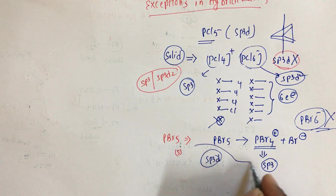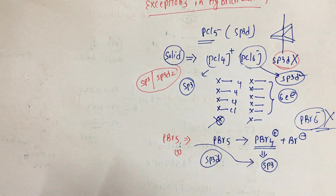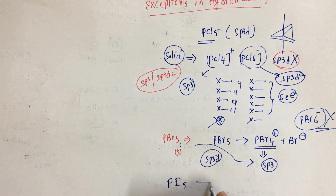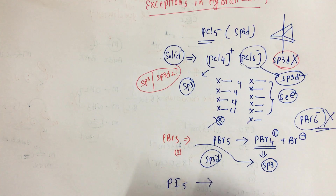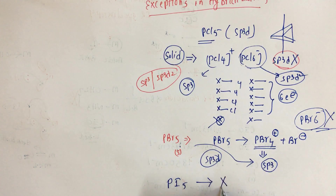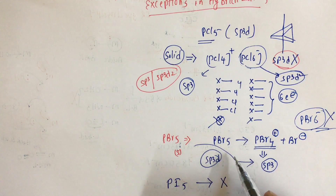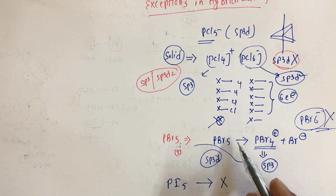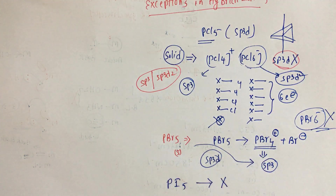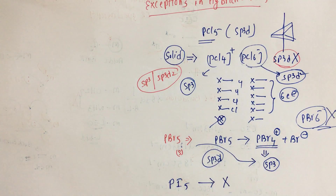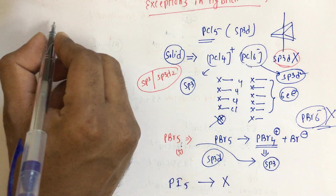In the liquid state, PBr5 hybridization is sp3d, but in the solid state it is sp3. For PI5, iodine is even larger than bromine, so it does not exist in ionic form like PBr5 and PCl5 do. These cover the PCl5, PBr5, and PI5 comparisons.